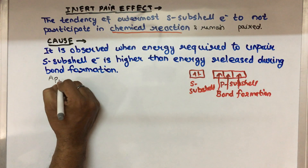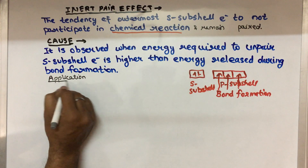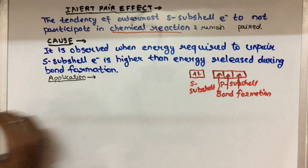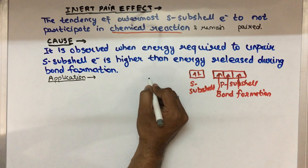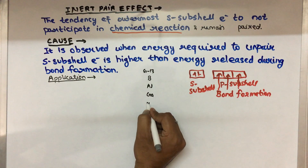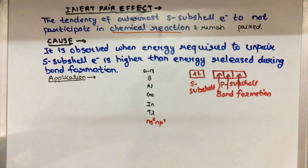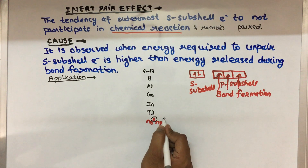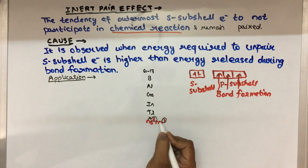This tendency of s sub-shell electrons to not participate in a chemical reaction is called the Inert Pair Effect. Application: what are the applications of the Inert Pair Effect? In chemistry we generally use the word 'generally' because exceptions are always there. Group 13 elements — boron, aluminium, gallium, indium, thallium — their general electronic configuration is ns2 np1, so their maximum oxidation state is +3. But if the s sub-shell electrons do not participate in the reaction, they can show +1 oxidation state.